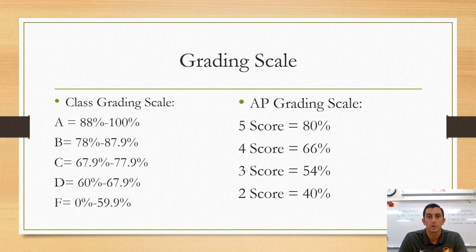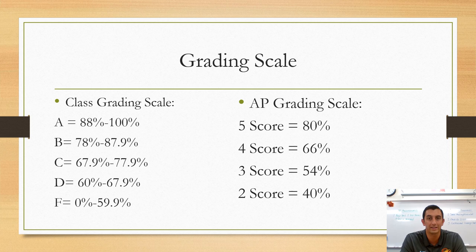The class grading scale uses A through F. We do not use pluses or minuses in this course. 88% and above is an A, 78% and above is a B, 67.9% and above is a C, 60% and above is a D, and anything below 60% is failing.